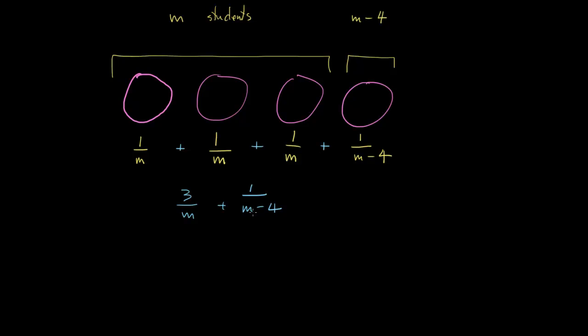So we've made some progress, but this still doesn't match the answer choices. How can we make it look more like the answer choices? Well, the answer choices are all a single fraction. And here we've got two fractions added together, so we've got to add these guys, which we can't do as they are, because they have different denominators. So we've got to find a way to give them the same denominator.